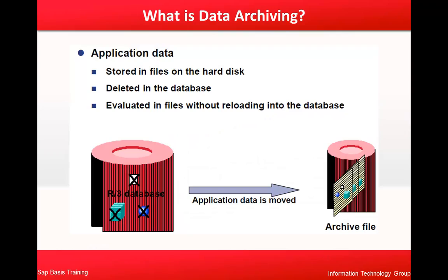Basically, why we need archiving and what is archiving? Application data is stored in files on the file disk, which is deleted in the database and evaluated in files without reloading the database. Here you can see this is your R3 database. This data needs to be archived. In step one, we store it in files on the file disk. Once it is stored there, we come and delete it in the database, and evaluate it in file without reloading into the database.